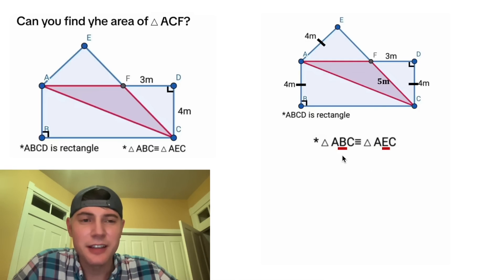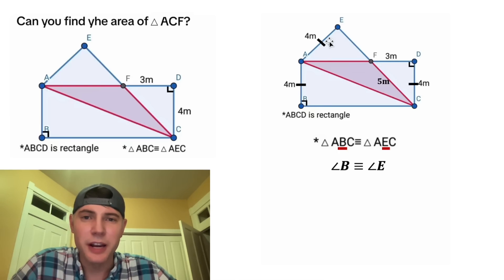And we also know since the second letter is B and this second letter is E, that angle B equals angle E. So since angle B is a right angle, that means angle E is also a right angle.